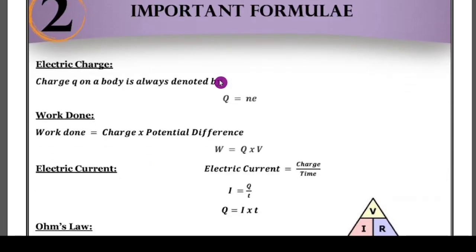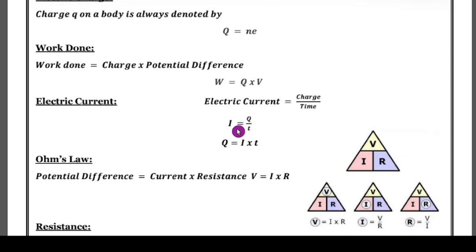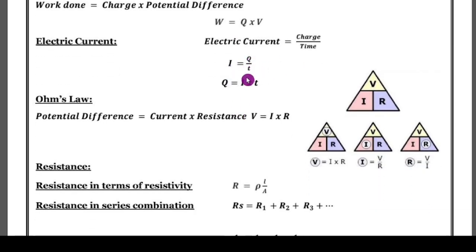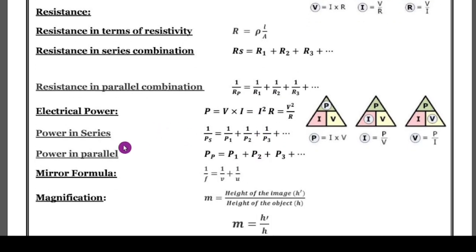Now, important formulas — I have collected these from all chapters and given them together, so they are easy to learn. First: electric charge Q = ne. Work done: W = Q × V (potential difference). Electric current: I = Q/t. Ohm's law is very important because they ask 2 to 3 marks problems to solve, and also ask you to define the law and explain what factors it depends on. Potential difference V = IR, and the resistance in terms of resistivity, resistance in series connection, and resistance in parallel connection — these two formulas are also very important.